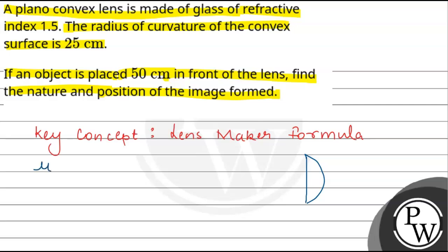The refractive index given is 1.5. For the radius of curvature: the planar surface has R1 equal to infinity, and the convex surface has R2 equal to 25 cm. Since the convex surface is on the left side, we write R2 as minus 25 cm.